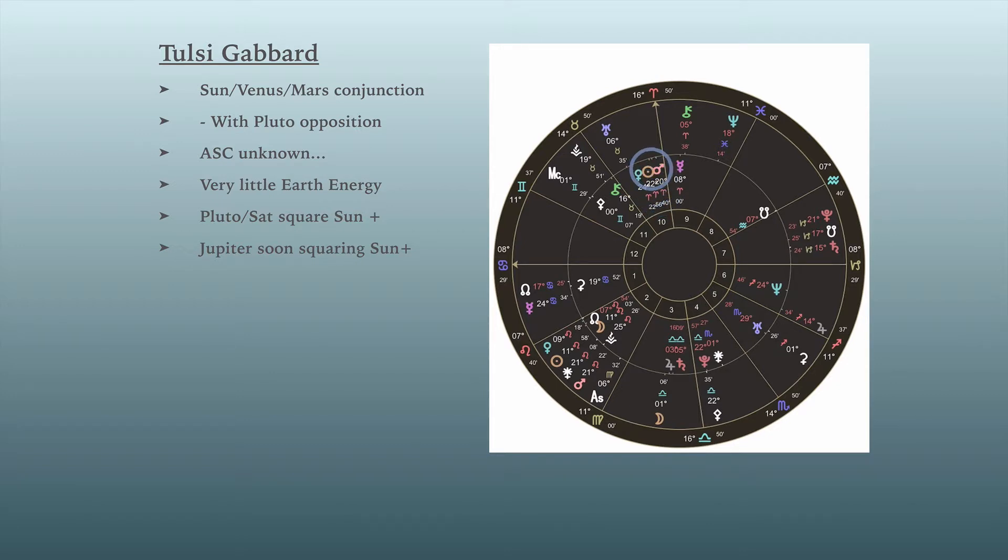This person likes to, she takes risks. She likes to win. She is very independent. And on top of this, this conjunction dynamic, everything is opposite Pluto in her chart, which adds just another dimension of willpower and determination.